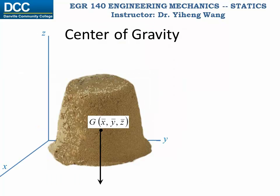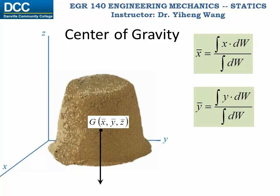Therefore, as a summary, we now know how to theoretically determine the coordinates x-bar, y-bar, and z-bar for the location of the center of gravity for a rigid body. In these equations, x, y, and z represent the coordinates of each particle belonging to this rigid body. As we will learn in the next two videos, center of gravity can be simplified to the centroid of a volume or even the centroid of an area. Also, bodies with complicated shapes can often be simplified as the combination of several common shapes for which the centroids can be determined much more easily.